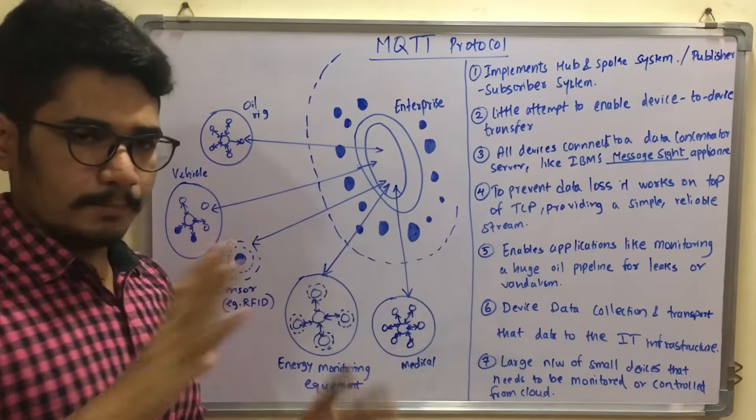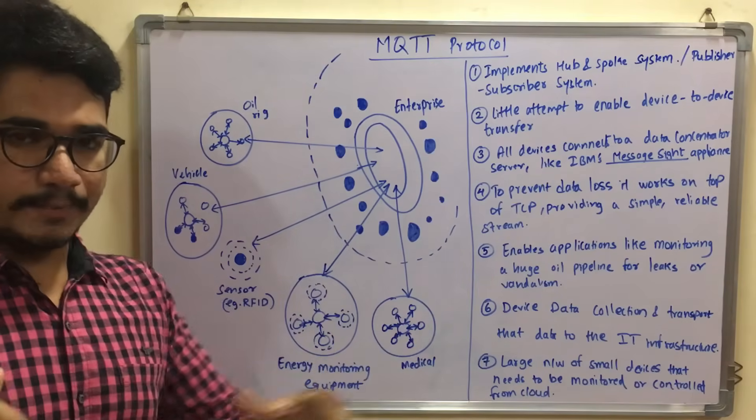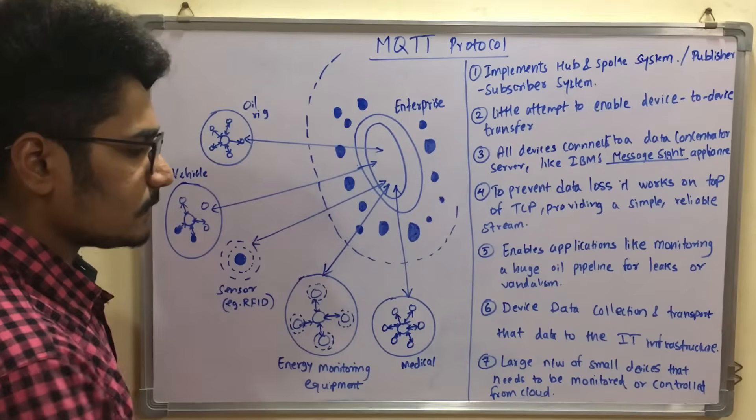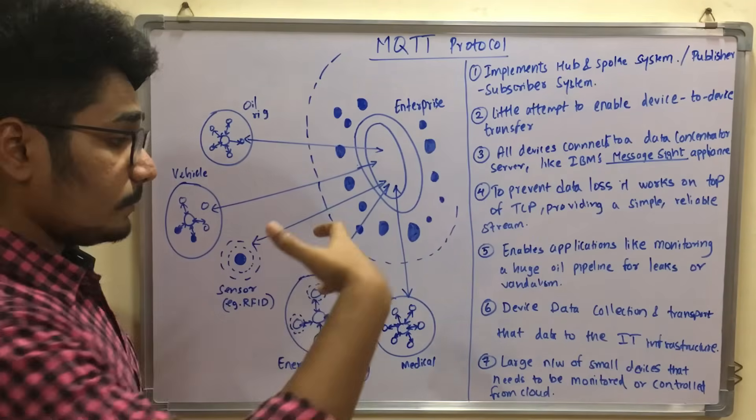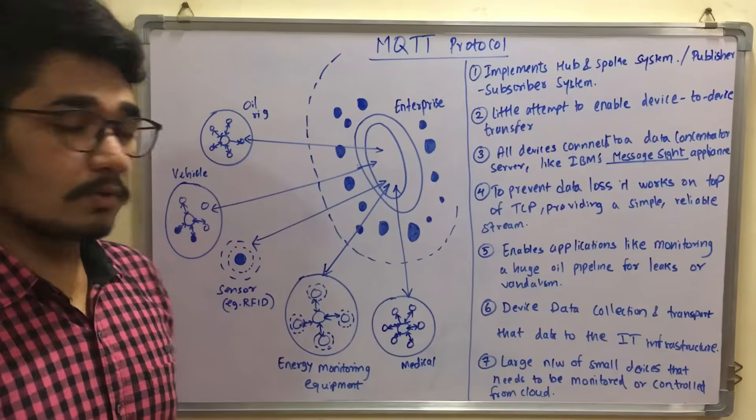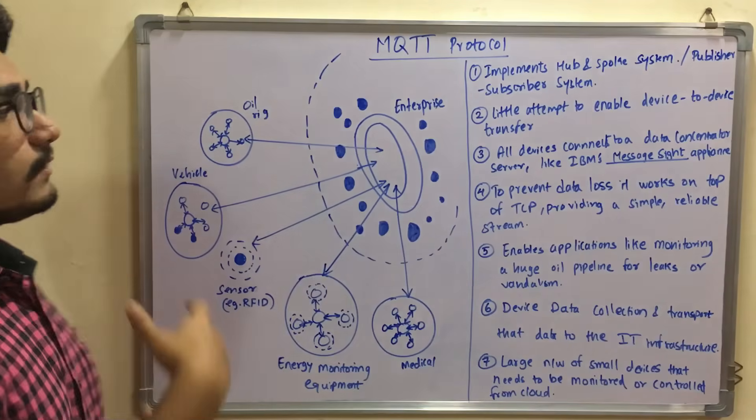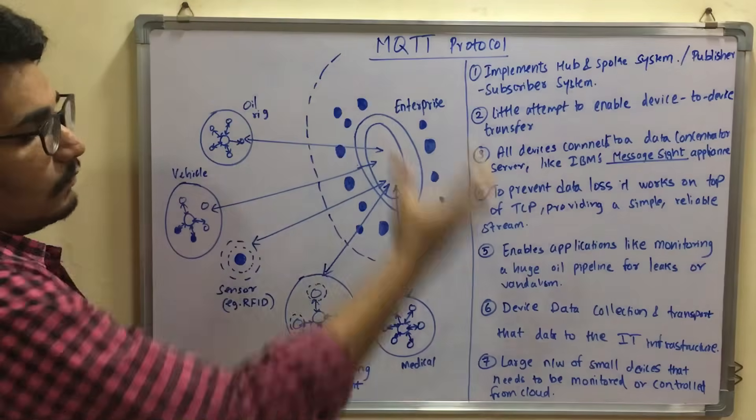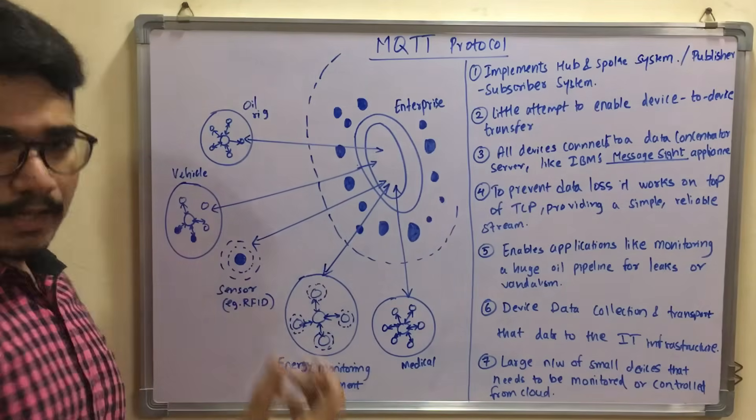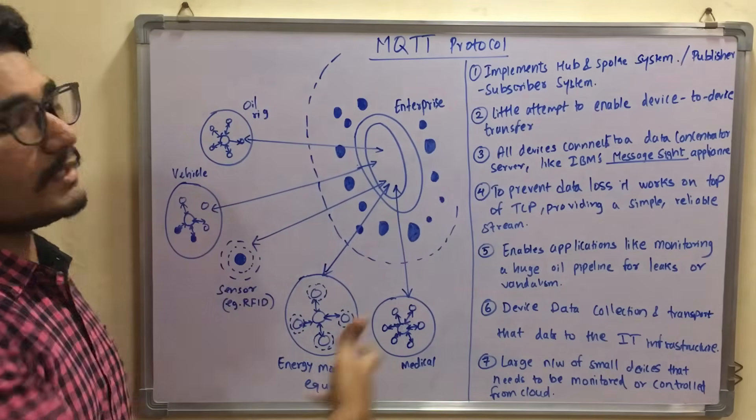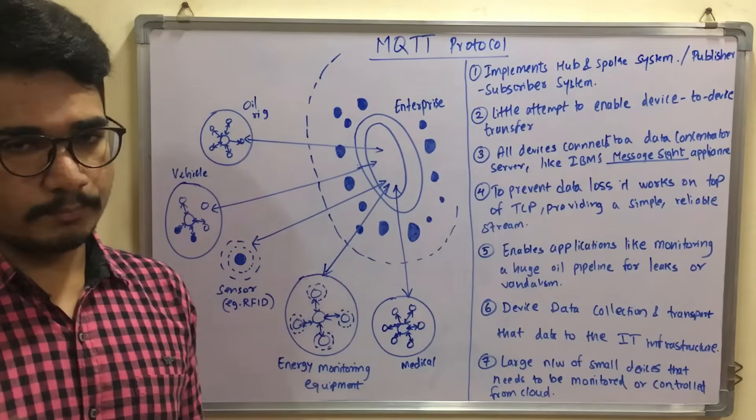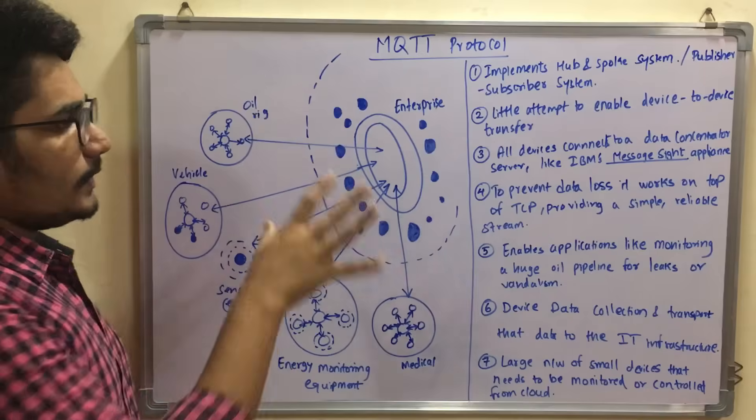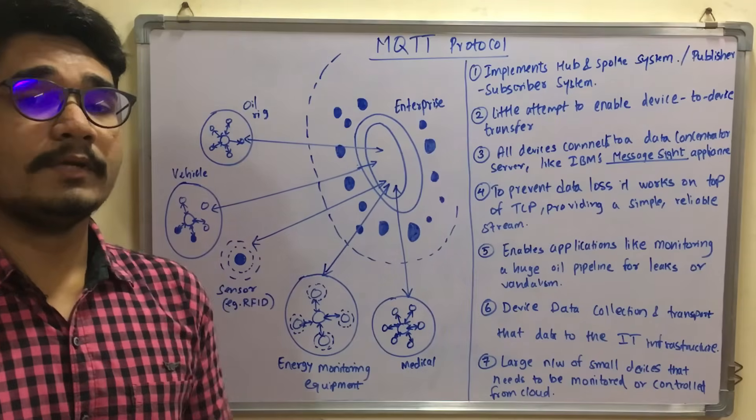This is mainly used for a large network. You want to create a very large network of small devices and those small devices need to be connected and should be controlled or monitored from the cloud. So if there is a cloud kind of environment there and if you want to control and enable data collection from all these devices, then you use the MQTT protocol over that particular network.